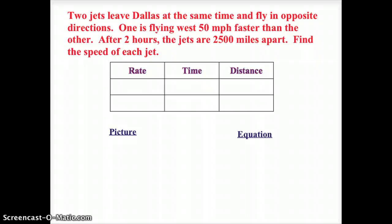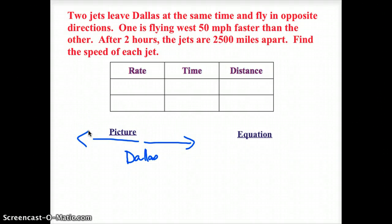Okay. So here we go. Two jets leave Dallas at the same time and fly in opposite directions. So here they are. Here's Dallas. One jet is going, we'll say east, and the other jet is going west. So one is flying west 50 miles per hour faster than the other. And after two hours, the jets are 2,500 miles apart. So we got the west jet and the east jet here. I don't know their rates this time. I just know that the one west is 50 miles per hour faster. So I'm going to call that X plus 50.